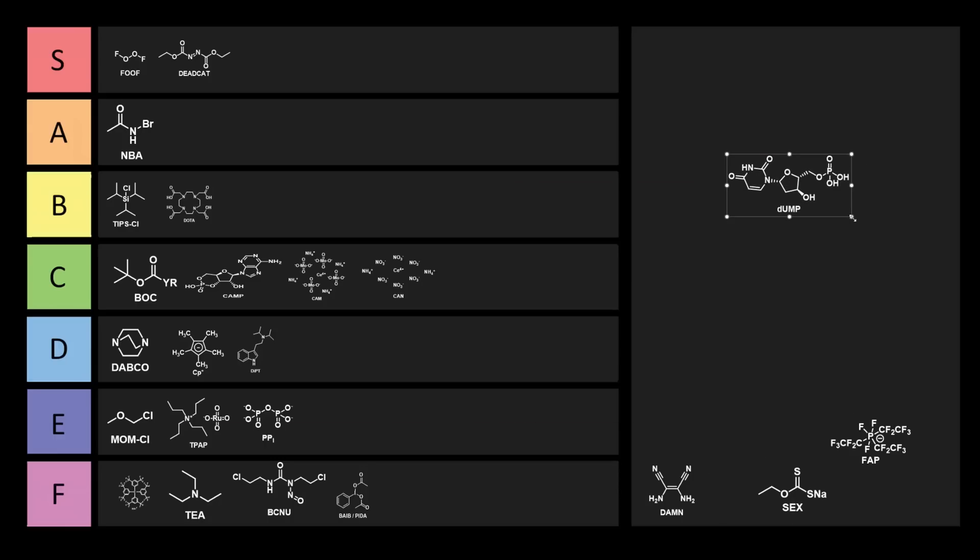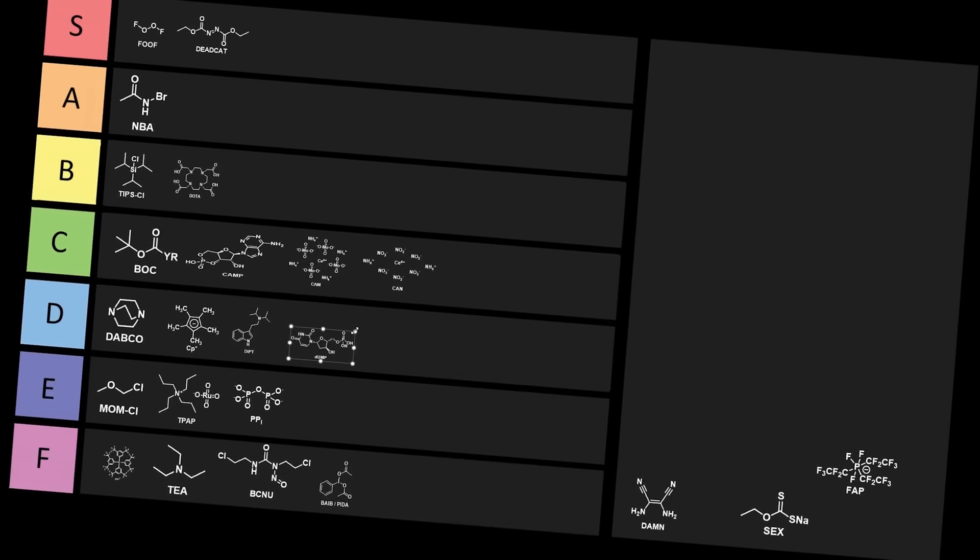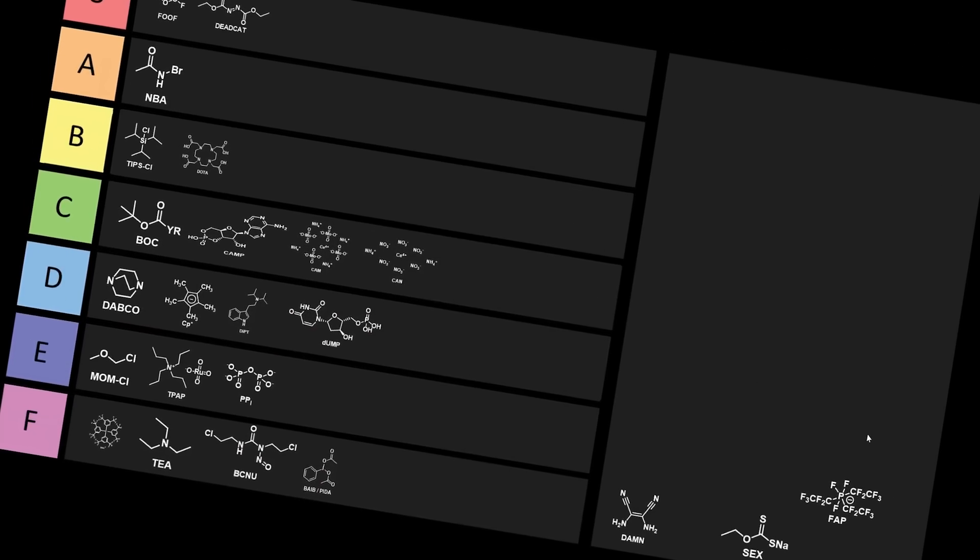Okay, next we have DUMP or D-U-M-P. This is deoxyuridine monophosphate, an intermediate in the synthesis of thymidine monophosphate. Your body makes this because you're a DUMP. This one's kind of dumb. This can go into D tier. You know exactly why this one's in D tier.